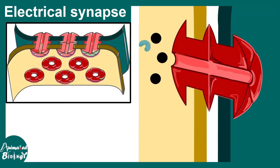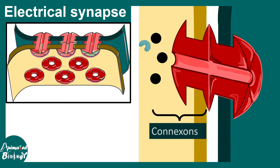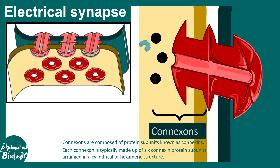This postsynaptic event leads to a potential change in the postsynapse. Now let's talk about the electrical synapse in a bit more detail. In electrical synapses, these channels are known as connexons. Connexons are composed of protein subunits known as connexins. Each connexon is typically made up of six connexin protein subunits, arranged in a cylindrical hexameric form.